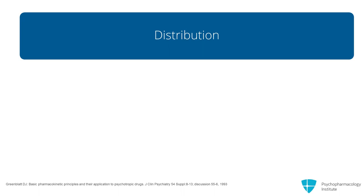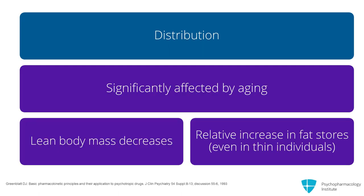Now let's think about the drug in the general circulation, which is distributed not only to the brain, but also to storage sites in fat, to storage sites in muscle, to the kidneys, and to the liver. Distribution is a process that can be significantly affected by aging because, as lean body mass decreases, there is a relative increase in fat stores. This is true even for thin elderly individuals.